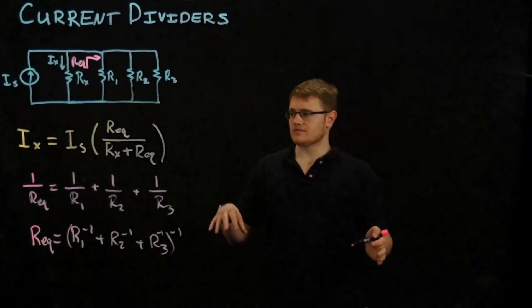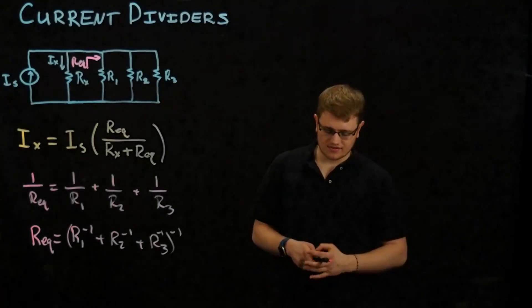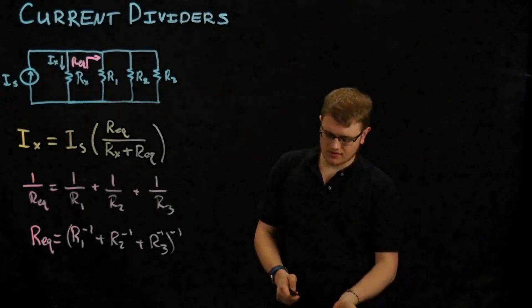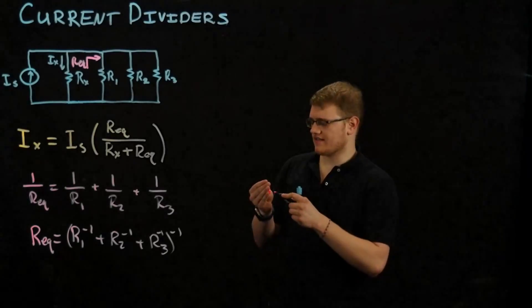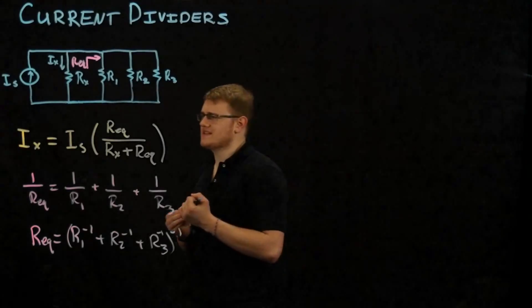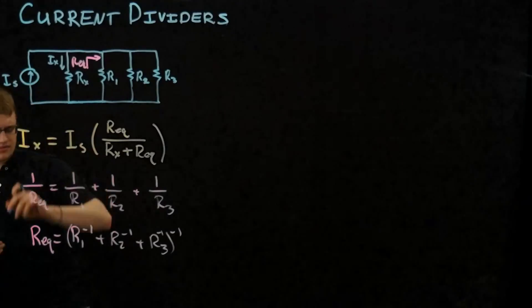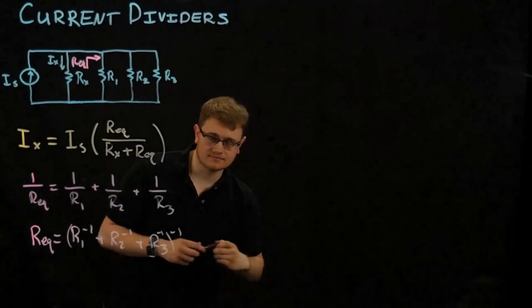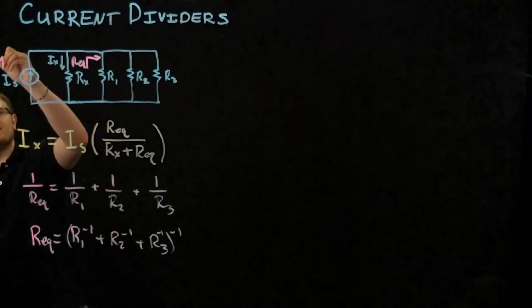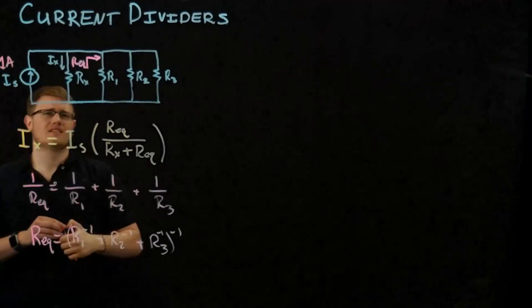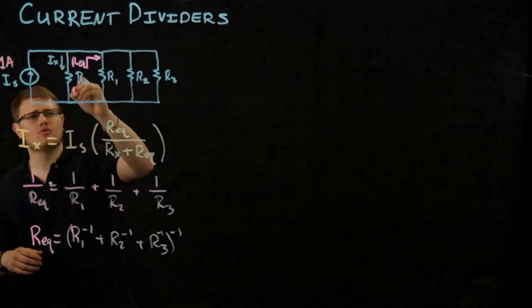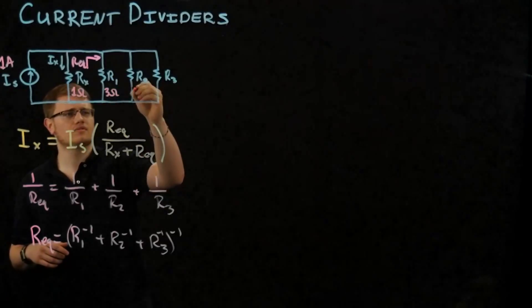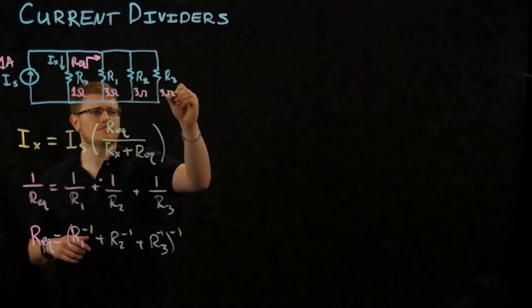Let's do a quick problem just to see this in action. Let's put some values up on the board there. What can we do? Let's try to make it easy. We have the source current, let's make that just one amp. I'll use a different color for you guys, because you're special. So we have one amp, one ohm here as a resistance, three ohms here, three ohms here, and three ohms there.